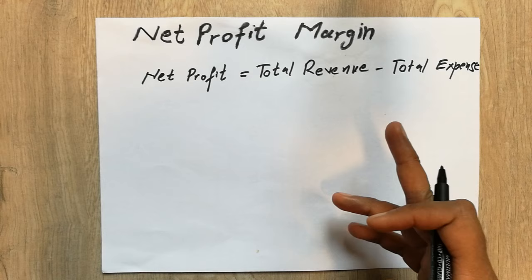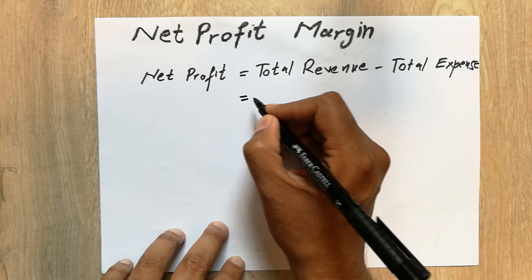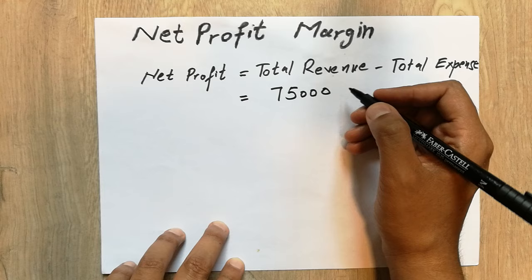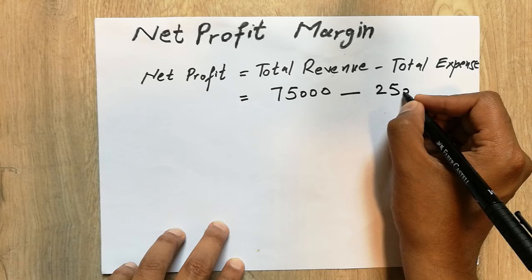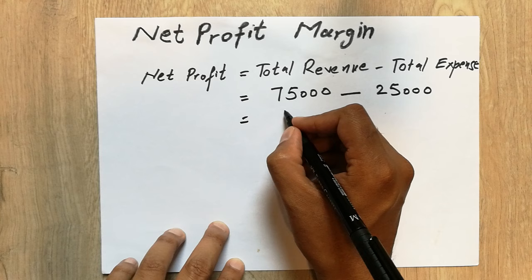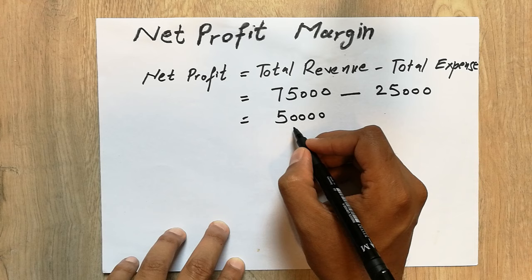Now we will put the values and find it out. For example, we have a total revenue of 75,000 rupees or dollars, and a total expense of 25,000. So 75,000 minus 25,000 equals 50,000. This is the net profit.